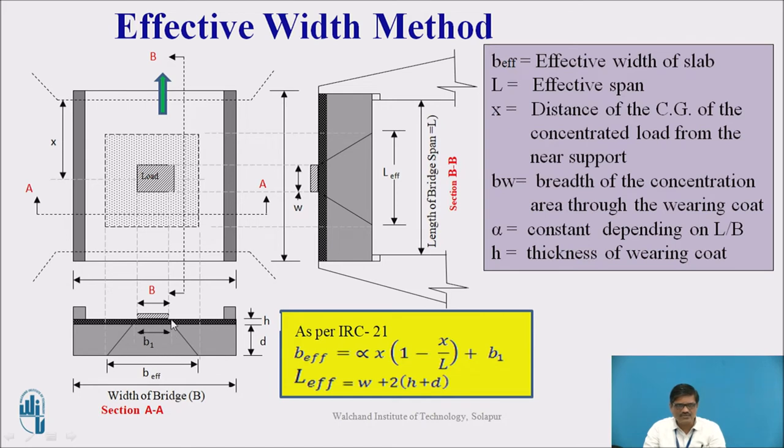And for this B1, we consider the dispersion at an angle of 45 degrees. Knowing the thickness of the wearing coat, we can find out B1. This is how the B effective is calculated.